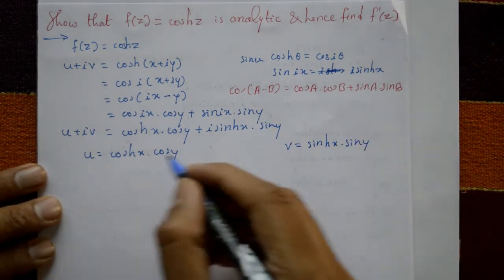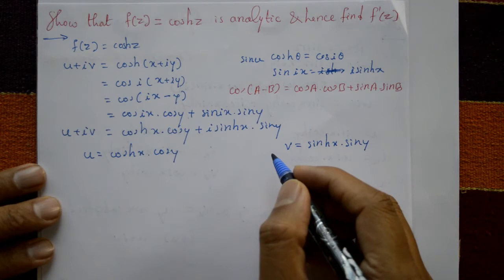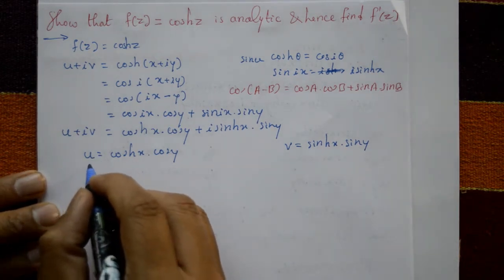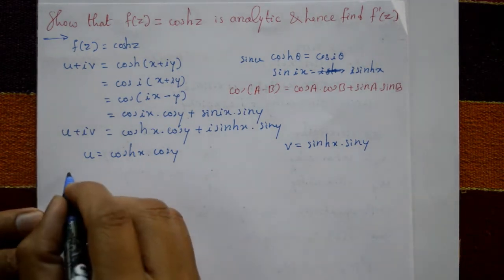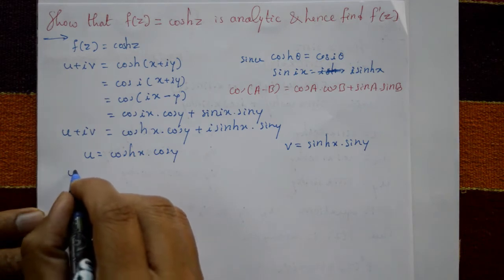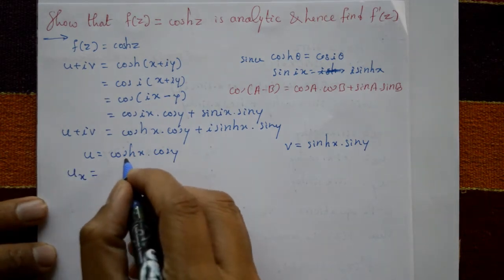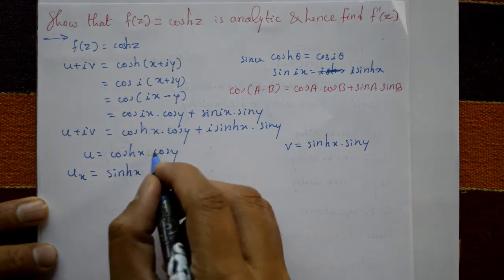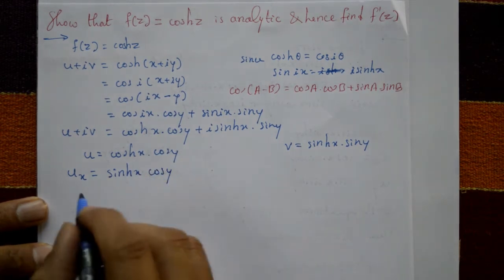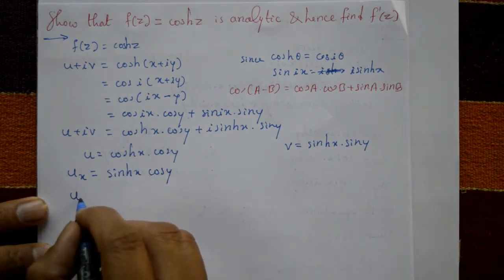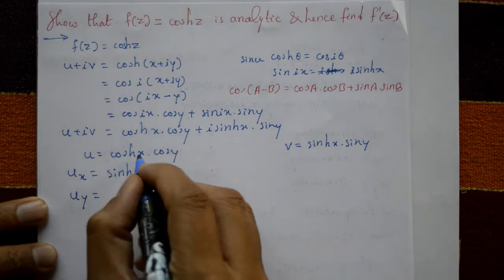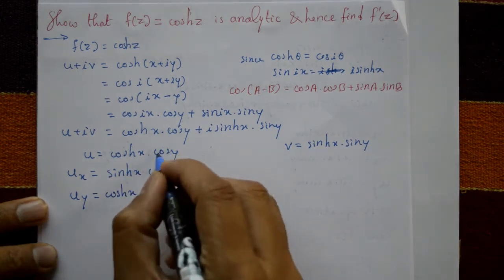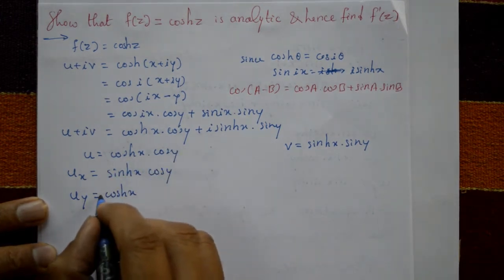Now verify the Cauchy-Riemann equations. Differentiating u with respect to x: ∂u/∂x = sinh(x)·cos(y). Differentiating u with respect to y: ∂u/∂y = -cosh(x)·sin(y).